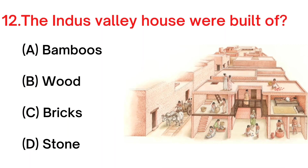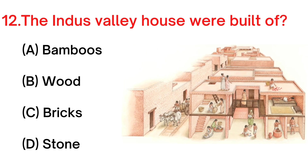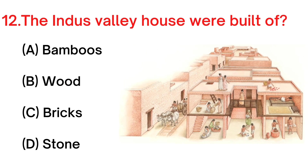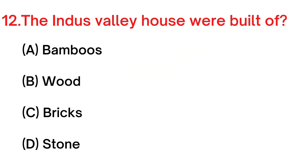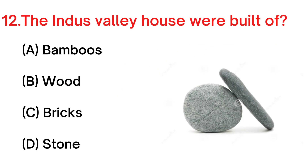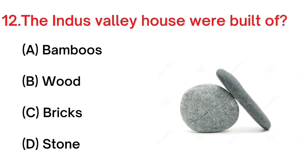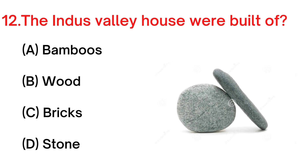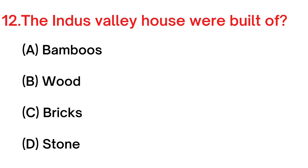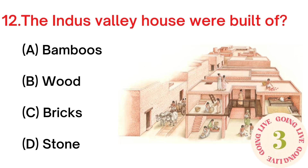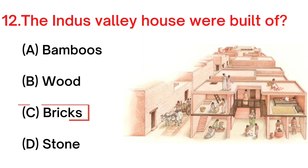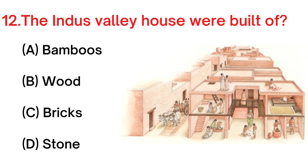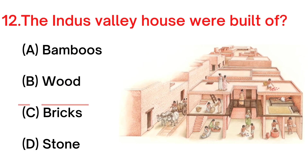Your next question: the Indus Valley houses were built of A. Bamboos, B. Wood, C. Bricks, D. Stone. Your answer is C. Bricks.